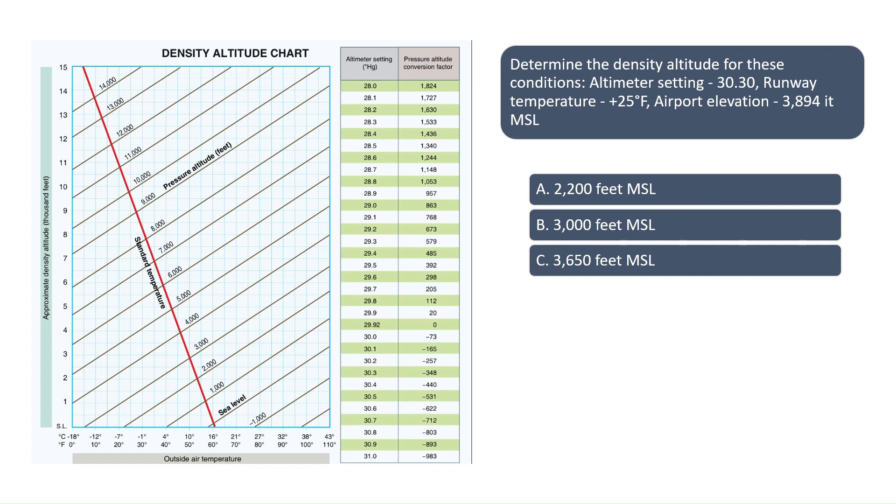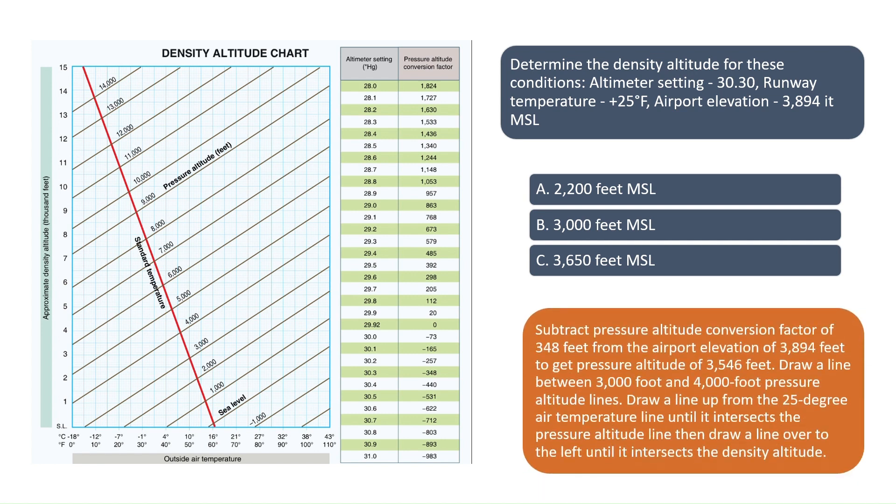The first step to solving this problem is to adjust the pressure altitude based on the current altimeter setting, which in this case is 30.30. Notice the pressure altitude conversion factor of minus 348 for the altimeter setting of 30.30. We need to subtract 348 from the airport elevation of 3,894 feet to get the adjusted pressure altitude of 3,546 feet.